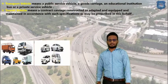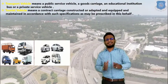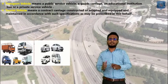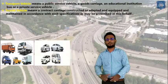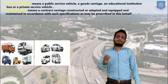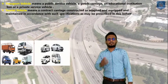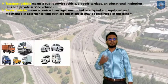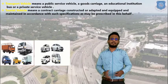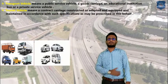What is the meaning of Tourist Vehicle? Tourist Vehicle means a motor vehicle used only for carrying passengers — excluding goods. It is a vehicle constructed or adopted with specifications prescribed for that purpose. In the diagram you can clearly see Tourist Vehicles.